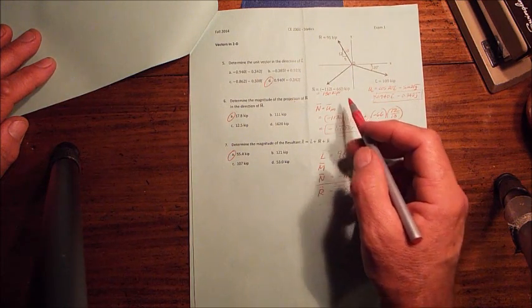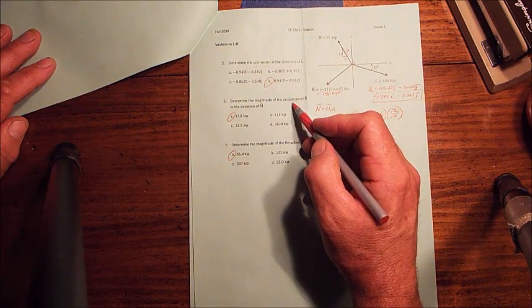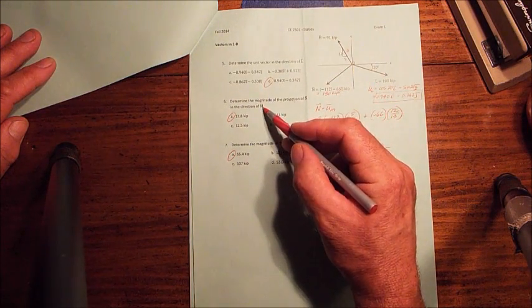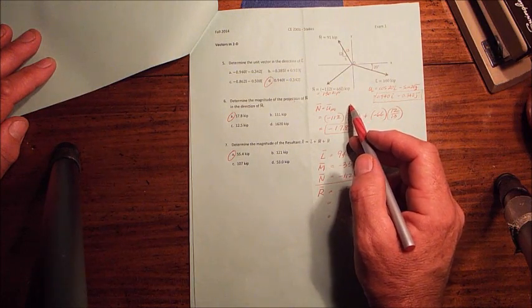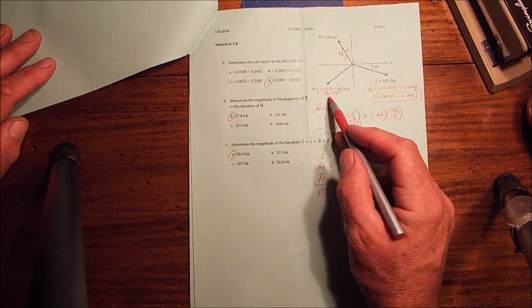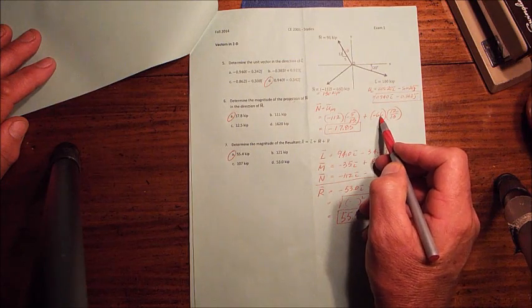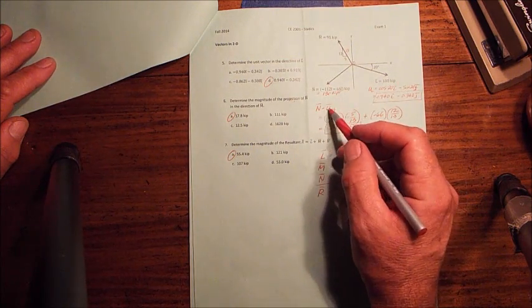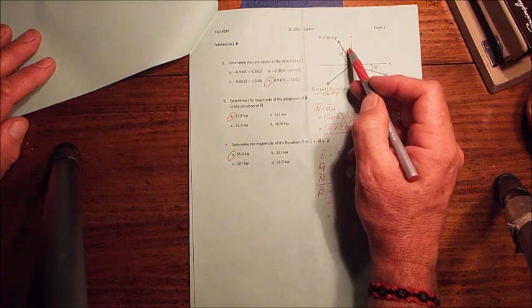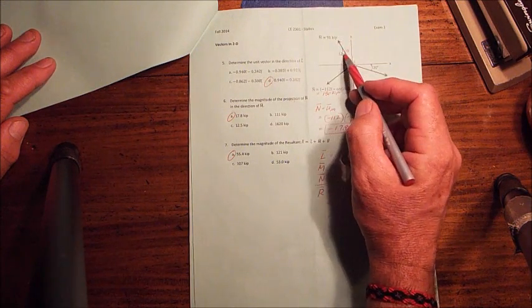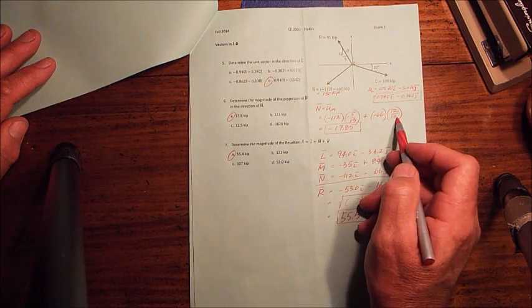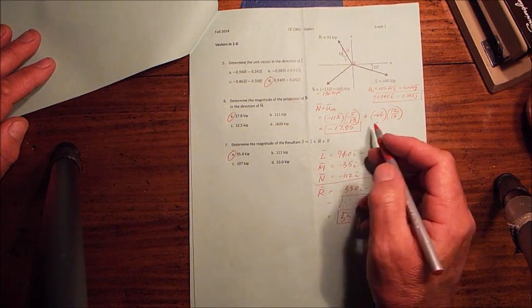Part 6, magnitude, which means scalar, projection, which means dot product, direction, which means unit vector. N dot product with u sub m. From the equation sheet, I just multiply the x's together and the y's together. The x and y of N are negative 112 and negative 66. The unit vector in the direction of M, the x is negative 5 thirteenths, the y is positive 12 thirteenths. Plug those values in, do the math, I get 17.85 kips.